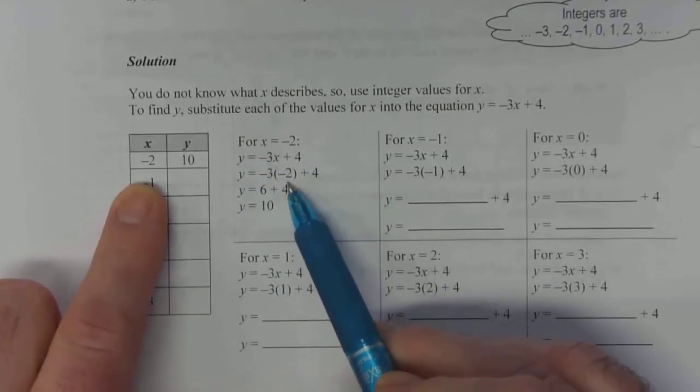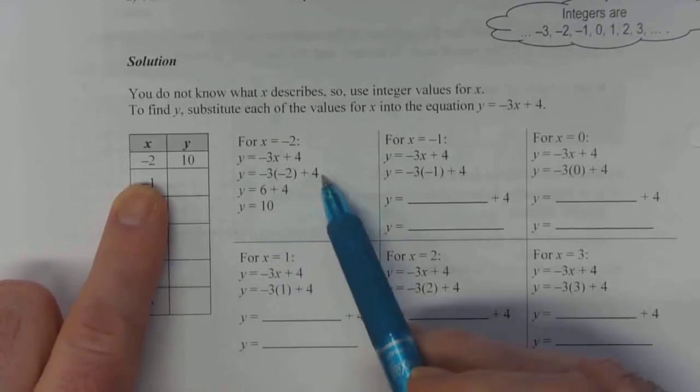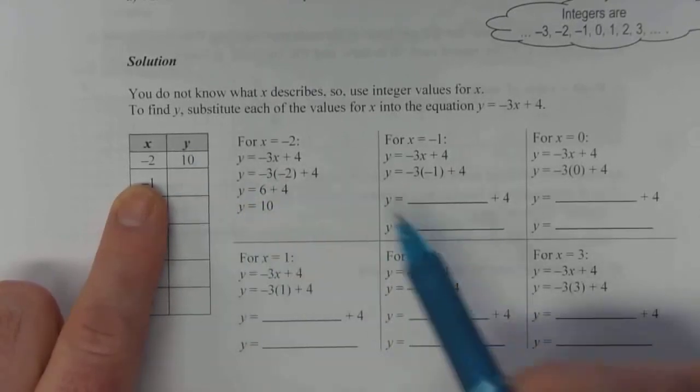we make x equal negative 2 and substitute that into the original equation. y equals negative 3x plus 4. So x becomes negative 2. Negative 3 times negative 2, that gives you positive 6. And then plus 4. So y equals 10, which is what's already indicated here.